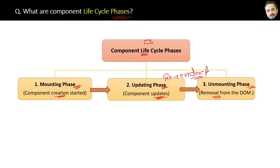The last phase is the unmounting phase. This phase occurs when a component is being removed from the DOM. For example, when you replace one component with another on a web page, the first component will be unloading — then only this phase's methods will be executed.